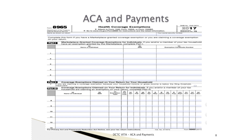Tax preparers complete Part 3 if the taxpayer or members of their household are claiming an exemption from coverage using IRS exemption codes. List the individual's name, social security number, the applicable exemption code, and the number of months each individual was exempt. If the individual is not exempt for the entire year, the taxpayer will be assessed an individual responsibility payment in the form of additional tax on Schedule 4 line 61. TaxSlayer Pro Online calculates the individual responsibility payment and places it on line 61 of Schedule 4 to be transferred to Form 1040.